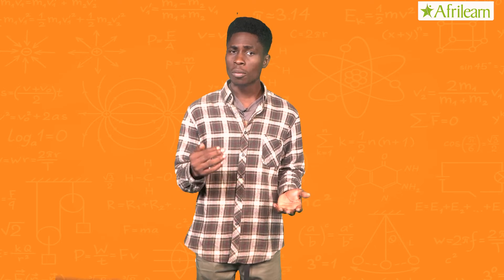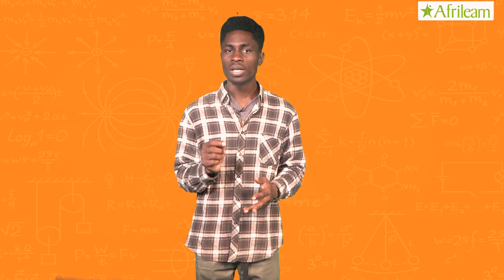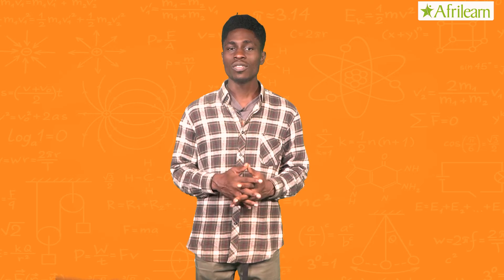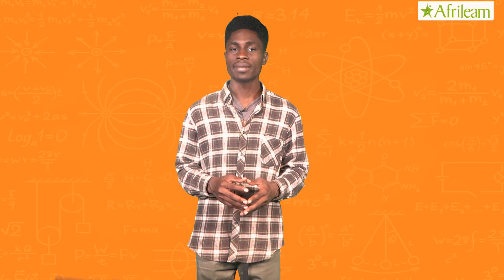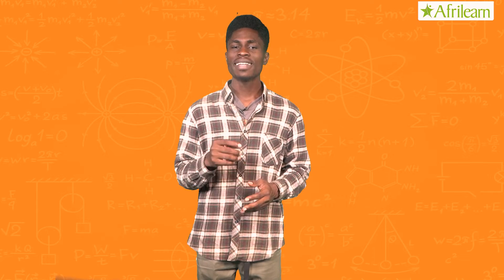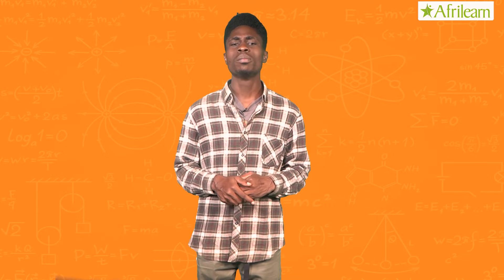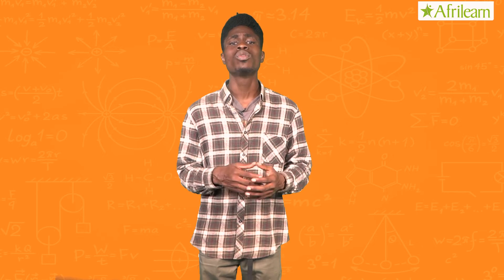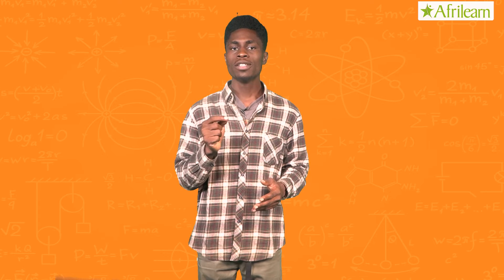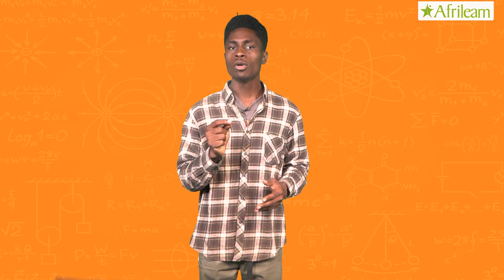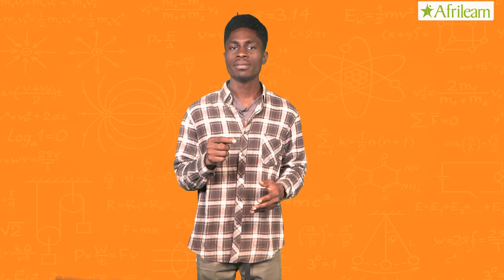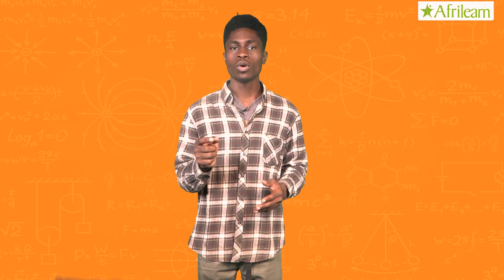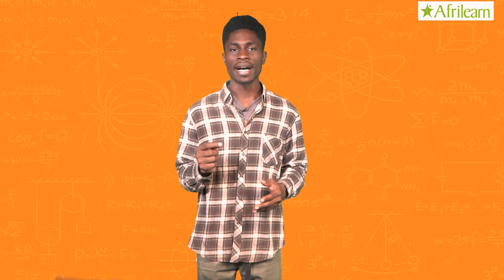Resistivity is commonly represented by the Greek letter rho. The SI unit of electrical resistivity is ohm-meter. Resistivity, symbolized by rho, is quantitatively equal to the resistance of a specimen such as a wire multiplied by its cross sectional area and divided by its length — that is, rho equals R times A divided by L.